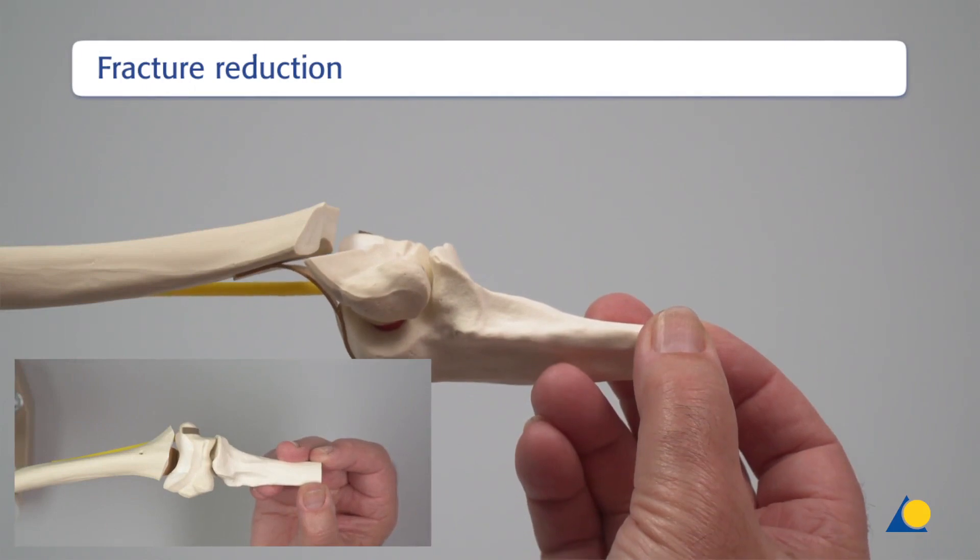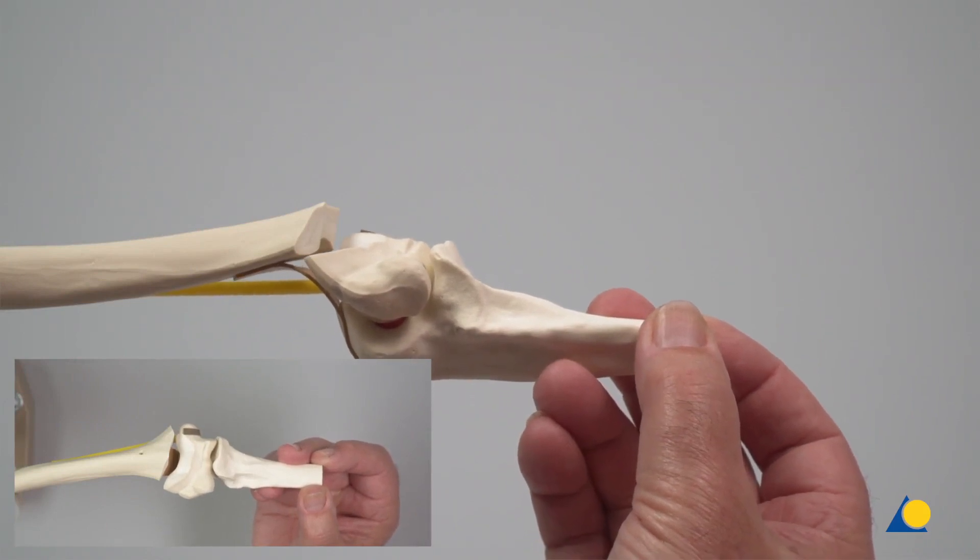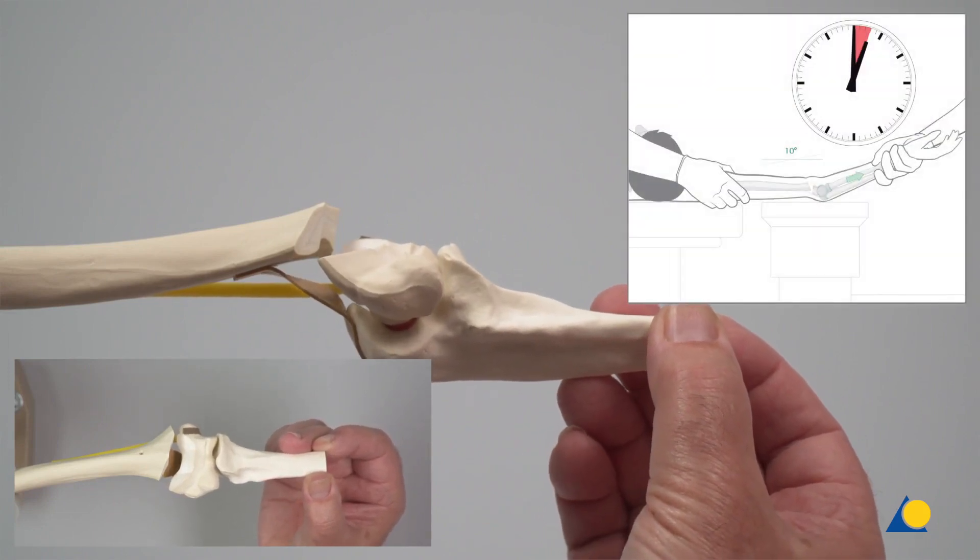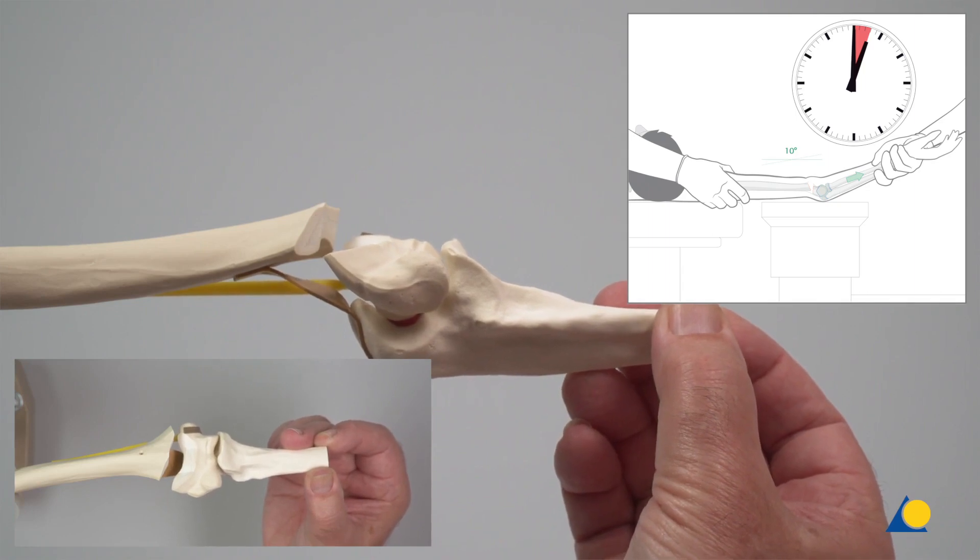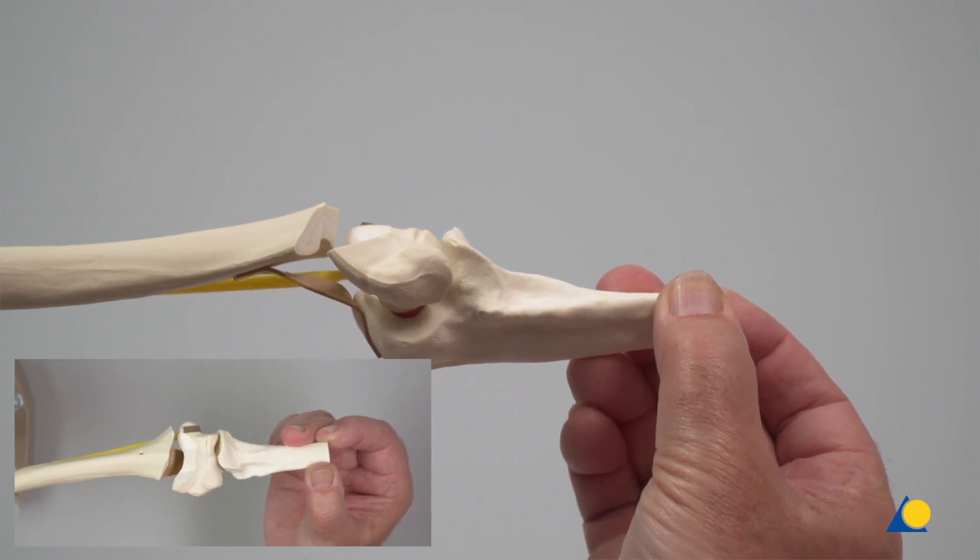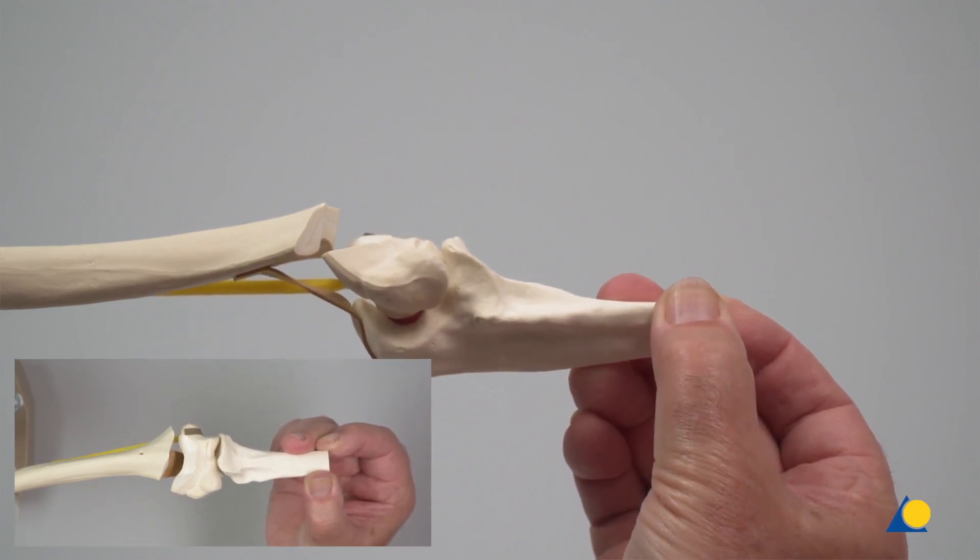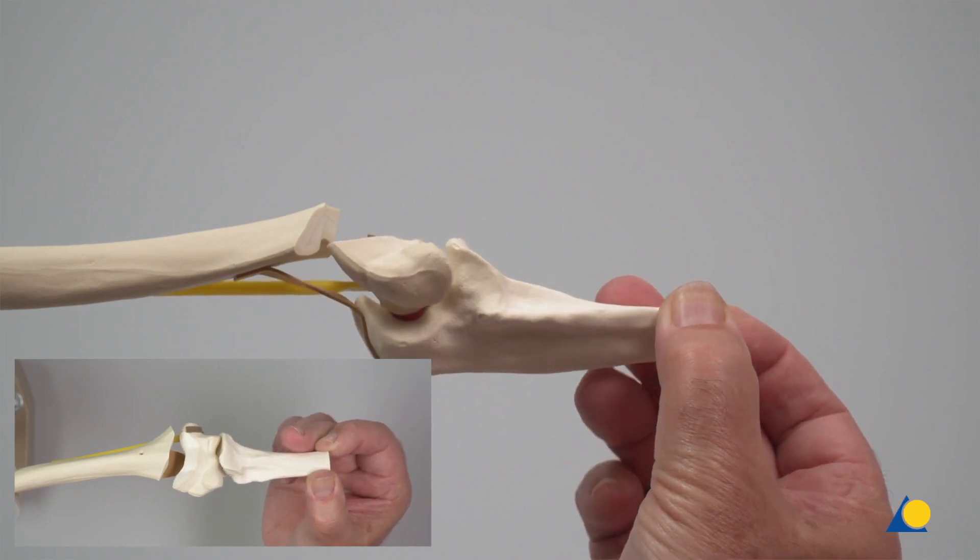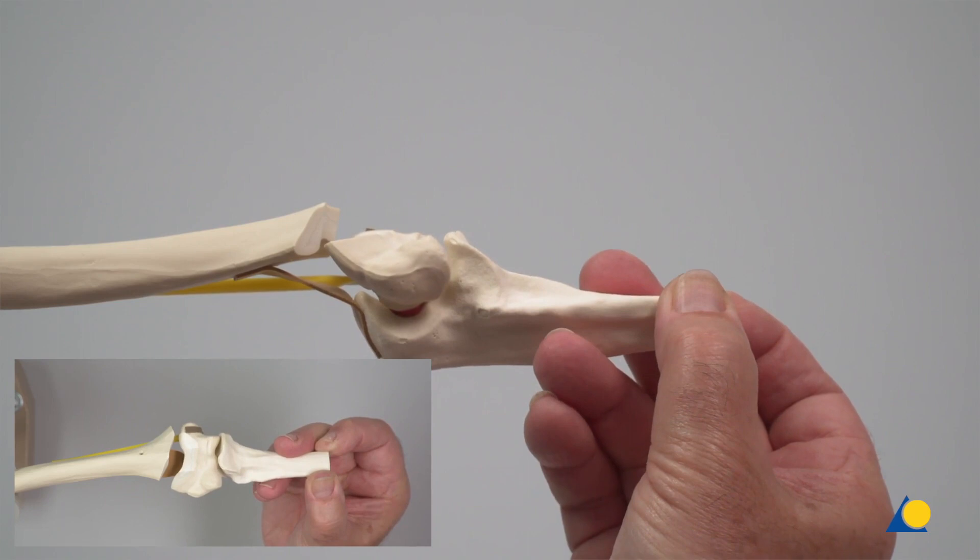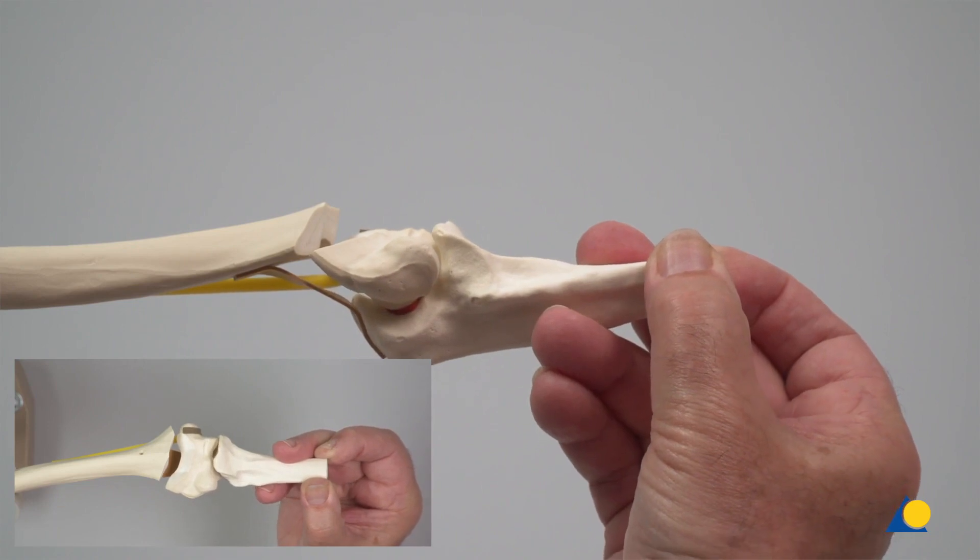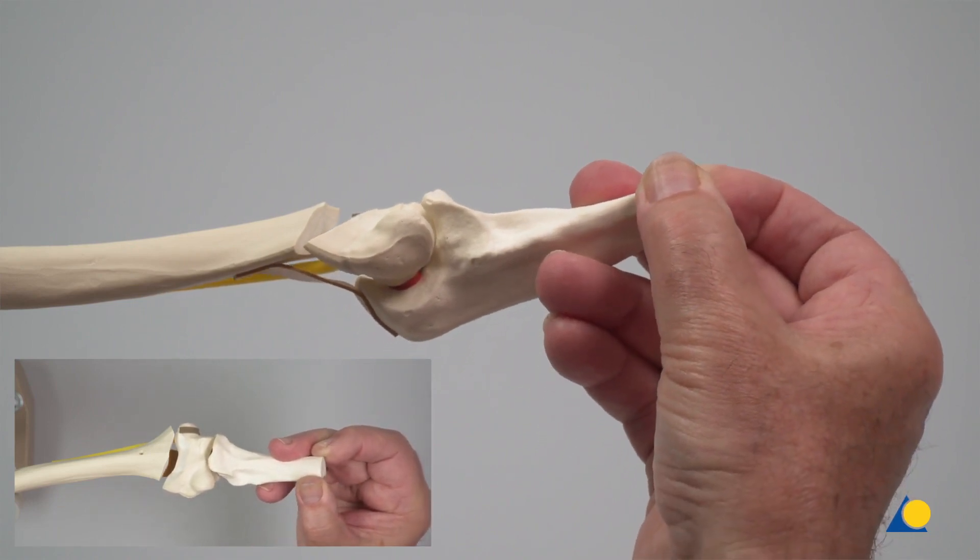In the clinical situation, closed reduction under image intensification would be performed on this type of fracture. With the humerus supported, the forearm along with the distal humerus fragment is pulled for 2 to 3 minutes. The fragment is manipulated in order to fully detach the fragment from the surrounding injured muscles and anterior periosteum. With the fragment detached, reduction begins using the intact posterior periosteum as a tension band. The forearm is used as a joystick and is flexed and pronated, thereby reducing the fragment to the metaphysis of the humerus.